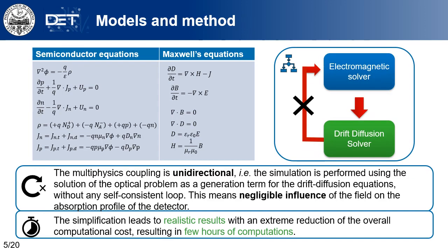The carrier transport model and Maxwell's equations should be treated self-consistently, since the solution of one domain may affect the other. Nevertheless, in low input optical power conditions, this effect is negligible, and the problem can be solved first from the optical point of view and then from the electrical point of view, avoiding the loop. This approach is very handy, since it returns quite accurate results in a few hours of computation.